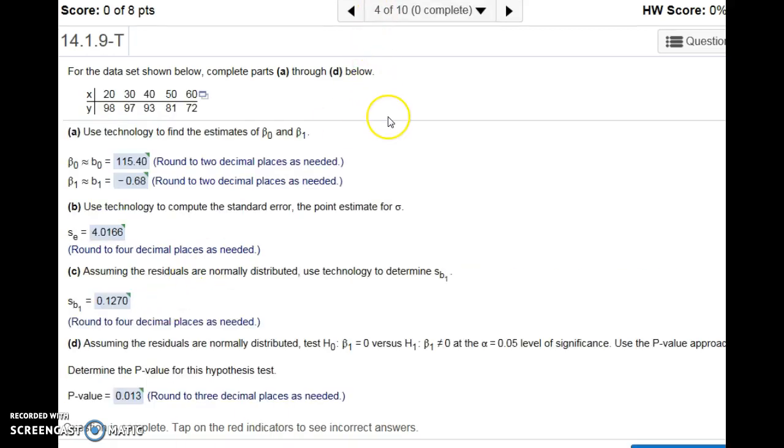Number four is going to be almost identical to number three. Just run that same setup in StatCrunch. We have the same alpha again and the same sort of hypothesis test in part D. It's very similar to three, just with different data.